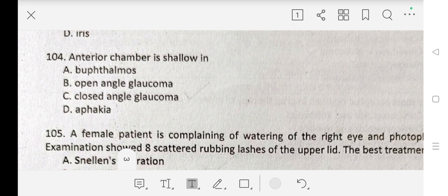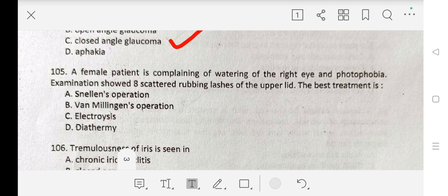Question number 105 is: A female patient is complaining of watering of the right eye and photophobia. Examination showed eight scattered rubbing lashes of the upper lid. The best treatment is A. Snellen's operation, B. Van Millingen's operation, C. electrolysis, D. diathermy. Our correct answer is B. Van Millingen's operation.